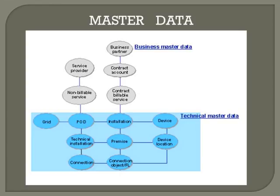FICA is applicable only for utilities, telecom, and insurance solutions. For each contract partner, we create a utility contract — the contract is division specific. Only when a contract exists for the contract holder can you bill the business partner. So if a business partner receives electricity, gas, and water services from a company, there must be three contracts, and for each contract we assign the business partner and the contract account.